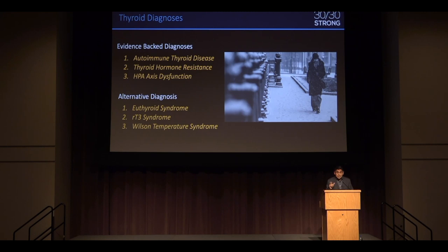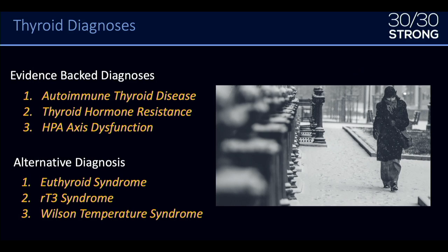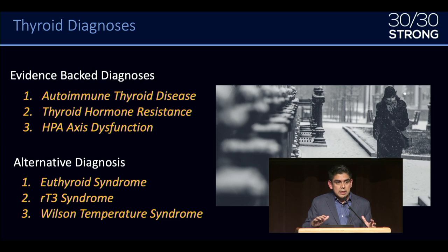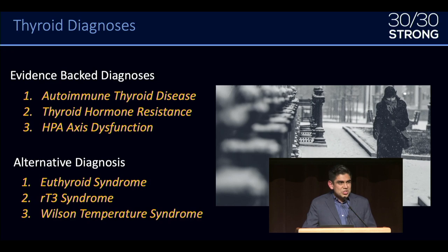When you have stress, aren't taking care of yourself, or aren't using a correct circadian rhythm, your body tries to modulate things — maybe decrease inflammation or increase protein production — which can cause your thyroid to become sluggish and your TSH to rise. There are also alternative diagnoses like euthyroid sick syndrome, reverse T3 syndrome, and Wilson's temperature syndrome. I'm not fully convinced about all of those.